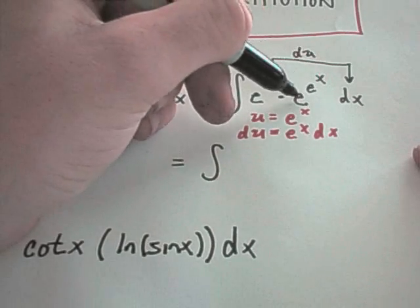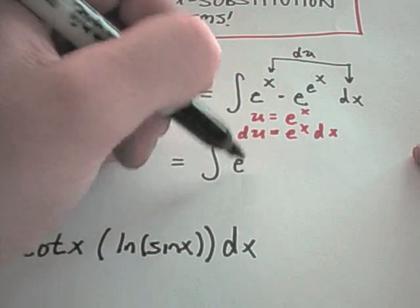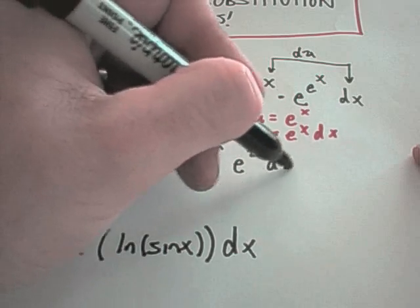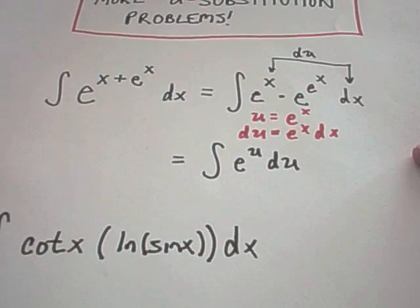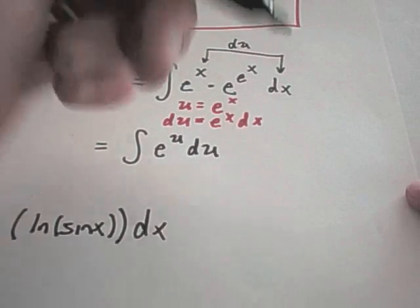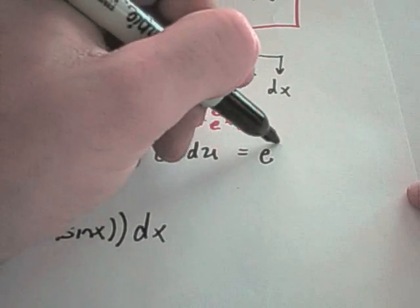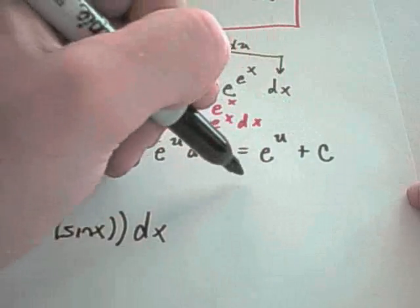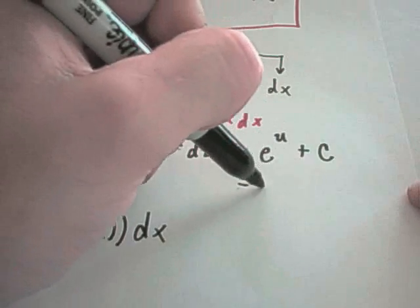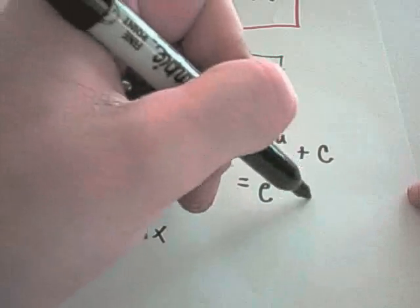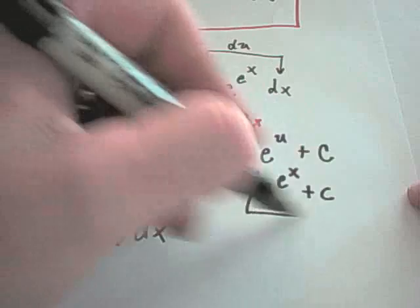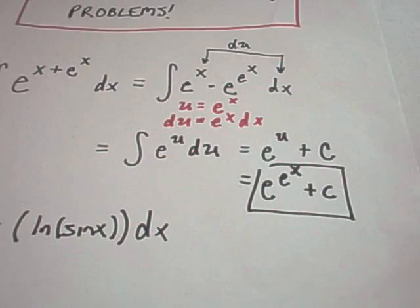And then I'm still left with e raised to the e to the x, but I can rewrite that as e to the u du. And if you integrate e to the u du, you simply get e to the u plus c. And now we simply replace what u was. It's e raised to the e to the x plus c, and that would be your antiderivative in this case.